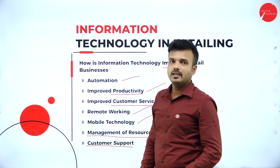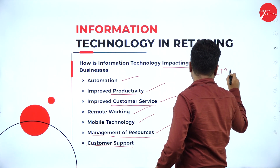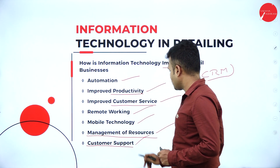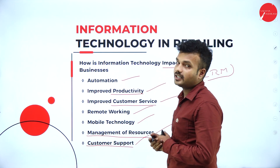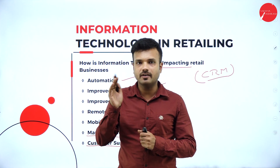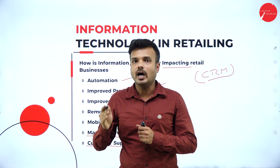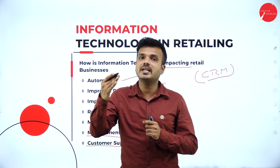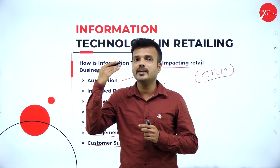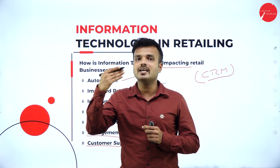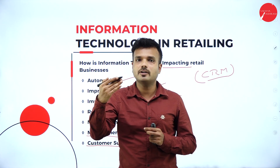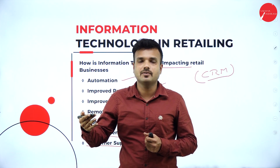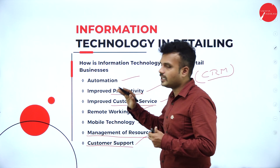Customer support — there is a software called CRM, Customer Relationship Management, which maintains a good relationship with customers. It is an automated software. For example, I have a cell phone and I recharge every month. After completion of 28 days the service stops, but 3 days before stopping, it sends a notification informing me that my recharge package is expiring in 3 days. This is a contribution made by information technology for the benefit of the customer.